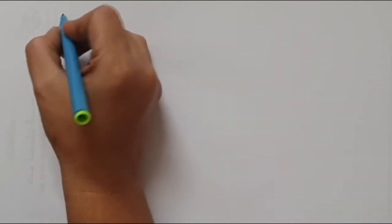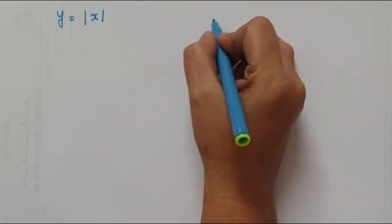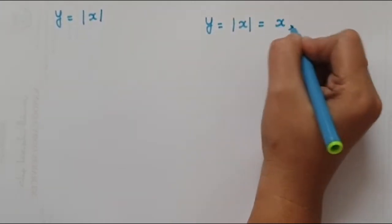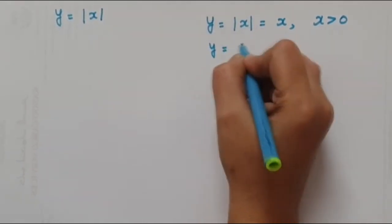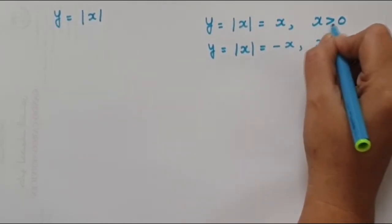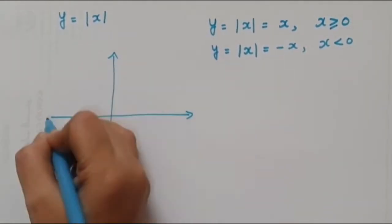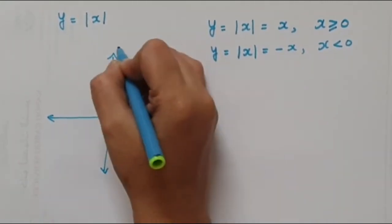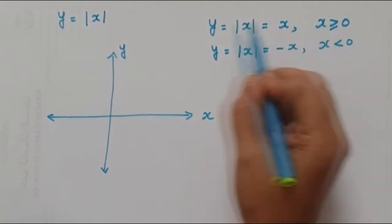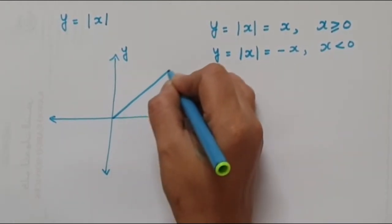The basic modulus function is y = |x|. We know that y = |x| equals x if x ≥ 0. So now let us draw the graph. We draw the x-axis and the y-axis. For all positive x values, that is x ≥ 0, y = x. The graph of y = x goes diagonally — when x is 1, y is 1; when x is 2, y is 2.